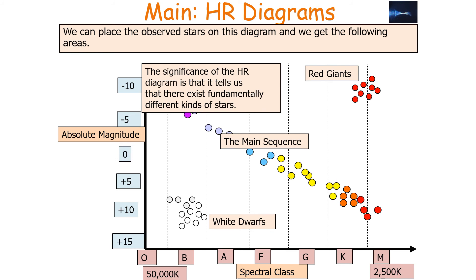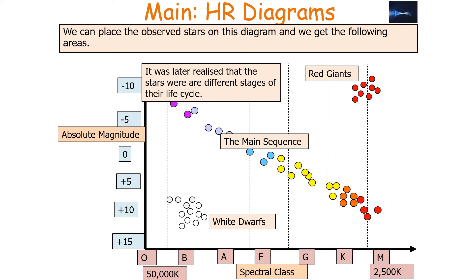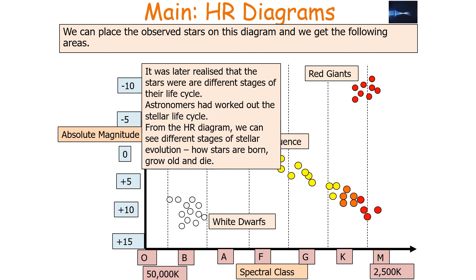The significance of the Hertzsprung-Russell diagram is that it tells us there are fundamentally different kinds of stars. When astronomers first saw these groups they were puzzled as to why there were three distinct types. It was later realised that the stars were at different stages of their life cycle, allowing astronomers to work out that there was a stellar life cycle. From the Hertzsprung-Russell diagram we can see different stages of stellar evolution.